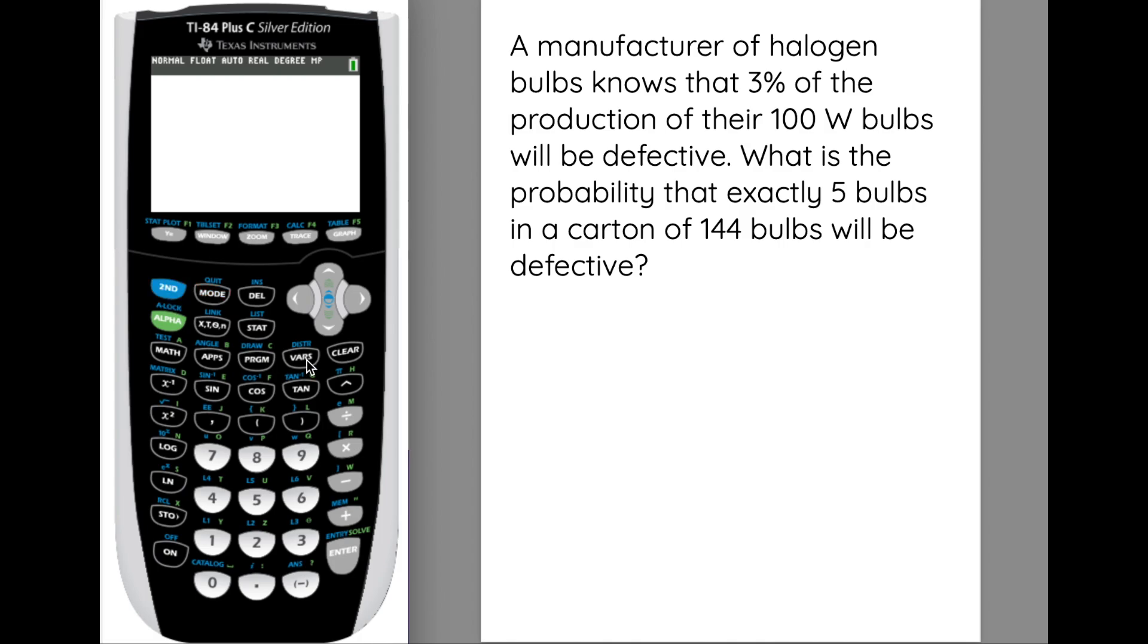So we go second, VARS, and we go down to our binomial PDF, and then we're going to input our values here. In this case, the number of trials is 144 because that's how many bulbs we have. The probability is three percent, but we have to write that as a decimal, so that's 0.03. And then the X value is the one we're interested in, so what is the probability that five of them are defective?